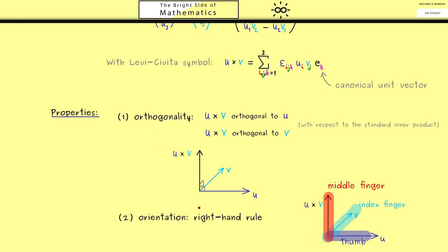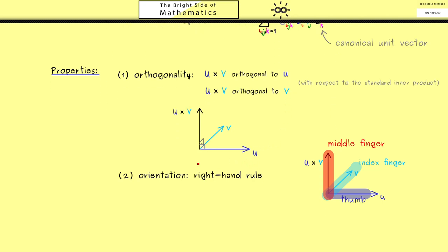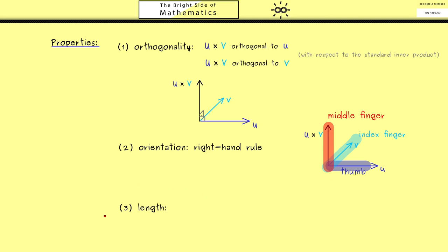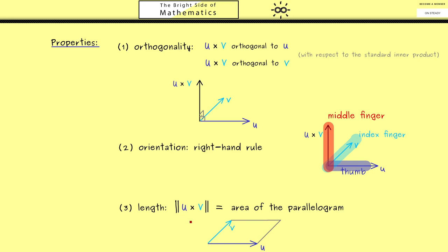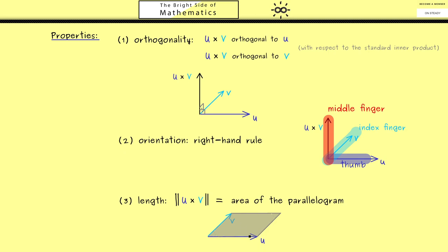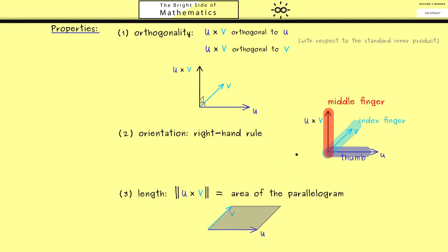The right-hand rule fixes the orientation — with just orthogonality there were two options, but the right-hand rule resolves this. The remaining question is how long the vector is. The Euclidean norm of u cross v equals the area of the parallelogram spanned by u and v. So the length of u cross v is the area of that parallelogram, which can be very useful in geometry — for example, half the parallelogram area gives you the area of a triangle.